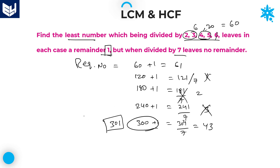Therefore, 301 is the least number which when divided by all these numbers 2, 3, 4, 5, 6 leaves the remainder 1, but when divided by 7 there is no remainder. 301 is the required answer for this question. I hope you enjoyed the session. Thank you very much for watching.